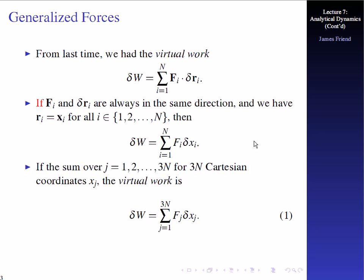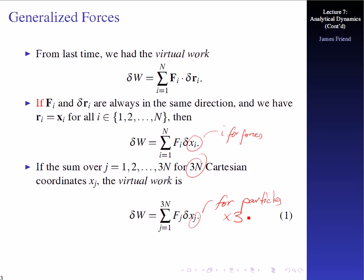If the sum is over j from 1, 2, 3, 4, 5, 6 all the way to 3n for 3n Cartesian coordinates x sub j, then we could also write the virtual work in that manner too. Notice that we're writing in two different ways: one in terms of i for the forces, and the other in terms of j for particles times 3, to give us something related back to the Cartesian coordinates.